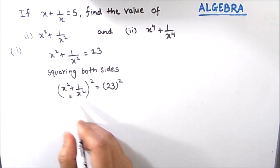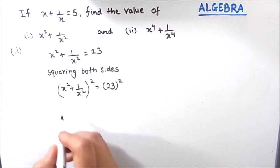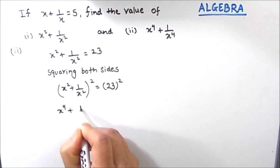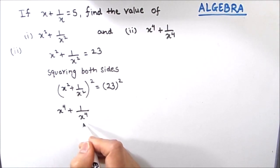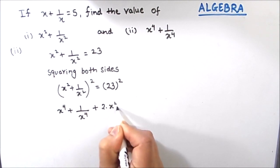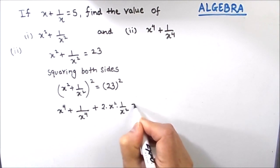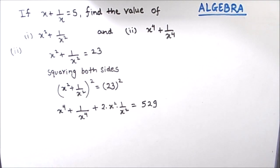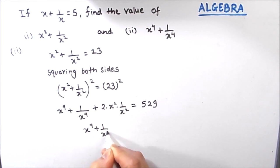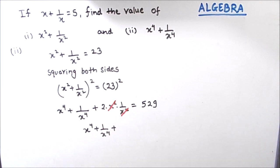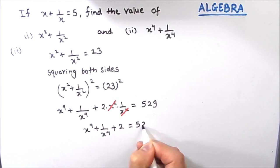Now we will use the a plus b whole square identity. So a squared gives x to the power 4, b squared gives 1 by x to the power 4, and 2 times a times b is equal to 23 squared, which is 529. This gives x to the power 4 plus 1 by x to the power 4, with the x squared terms cancelling, plus 2 is equal to 529.